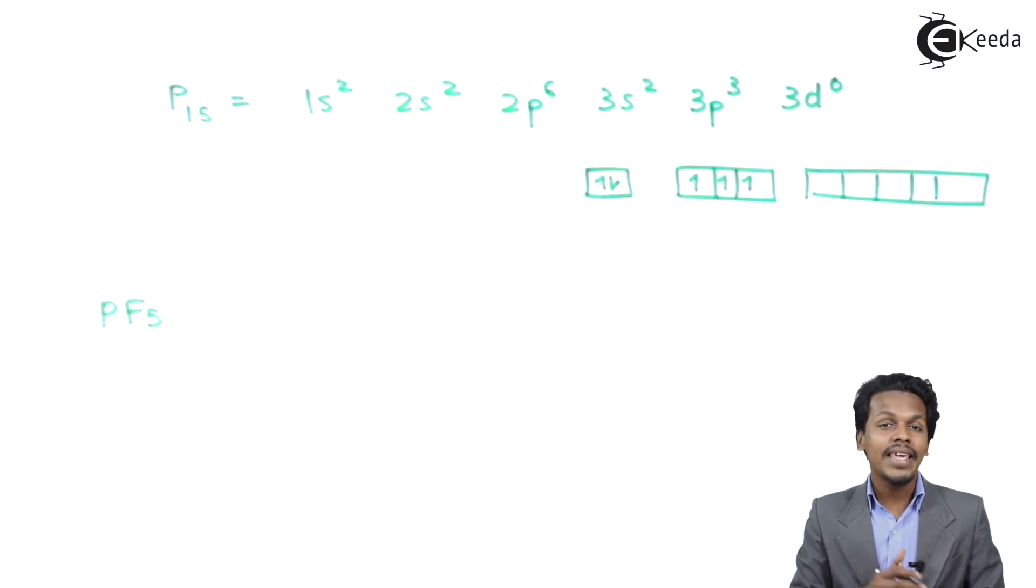That is why PF5 exists and NF5 does not exist. Similarly, NCl5 does not exist, but PCl5 exists. Because of the unavailability of the d orbital, NF5 cannot exist. This is related to oxidation state. Nitrogen has a maximum covalency of 4 that cannot be extended, but phosphorus can be extended.